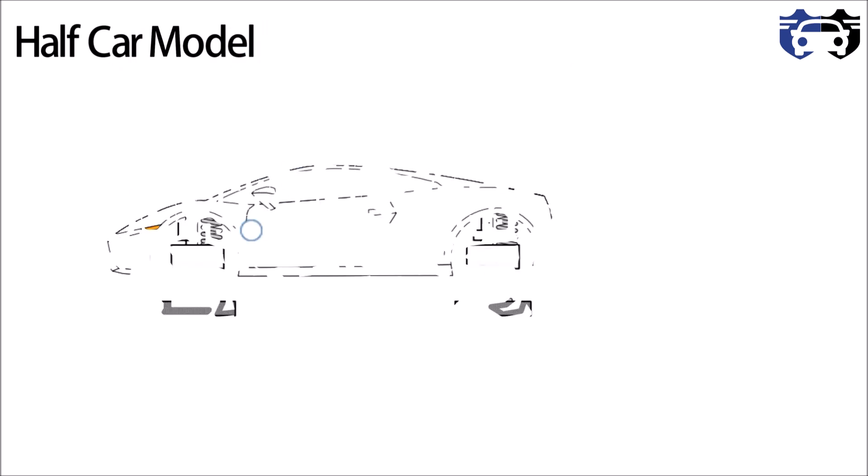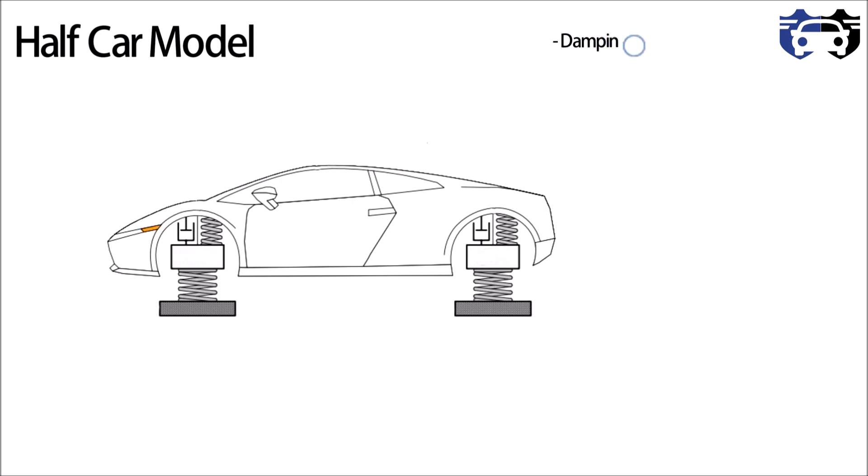Let's see how. Here I am taking half car model. Basically in half car model only one side of car is considered. This is your car. As you can see, the suspensions are represented by spring and damper assembly, and tire is shown by the spring. Here in half car model the damping effect of tire is neglected. Ms is the sprung mass, m1 and m2 are the unsprung mass at the front and rear respectively.